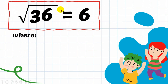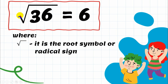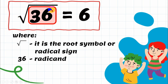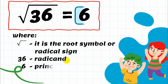If you see a radical expression like this, the symbol you see here is called the radical sign. Take note of that symbol — that is your radical sign. The number found inside the radical sign is called your radicand.